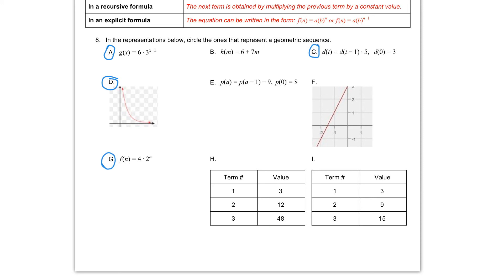That multiplying each time indicates that we do have a geometric sequence. So we can circle H, and you can indicate here that we are multiplying by 4 each time.